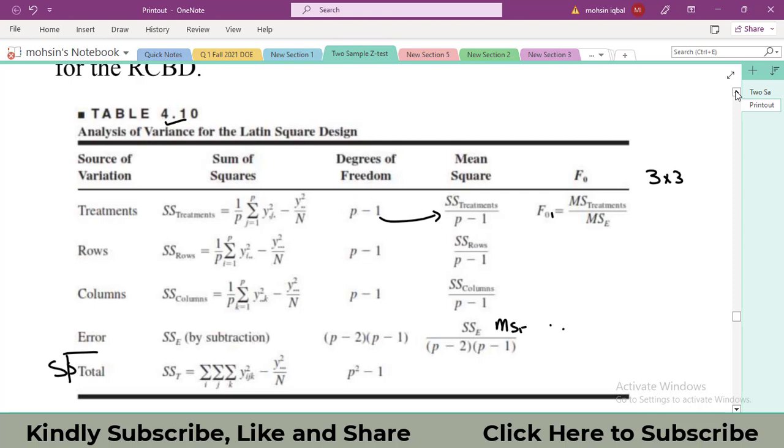Here, the book has calculated the F naught value for only treatments. However, if you want to find whether my nuisance factors are significant or not, please calculate F naught 2.